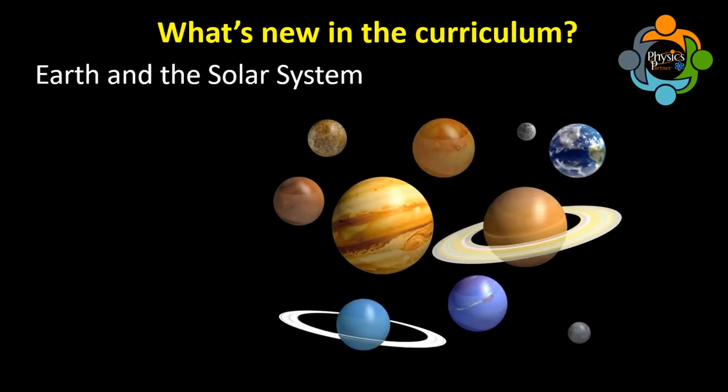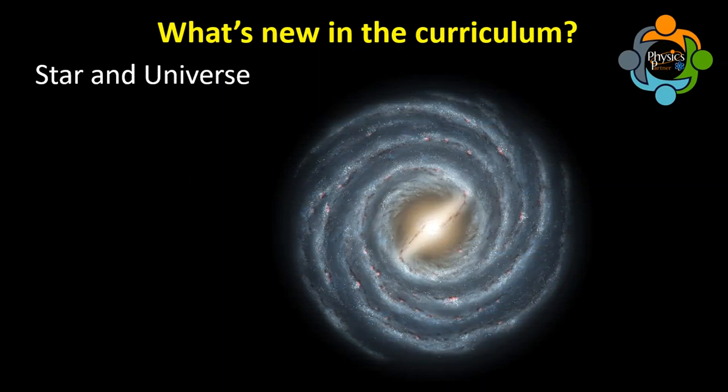Another major change is the inclusion of Earth and the solar system. This kind of content existed in Pearson Edexcel before, but Cambridge IGCSE has now introduced it as well. Students are expected to calculate orbital speed, understand how the solar system works, and study stars and the universe — including Big Bang theory. This astrophysics content is completely new to the IGCSE physics curriculum.